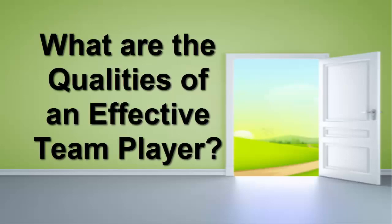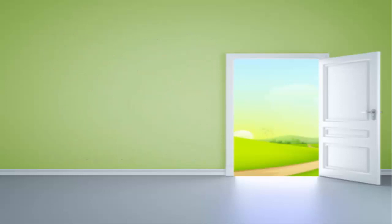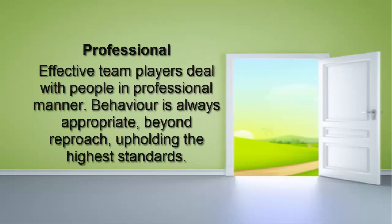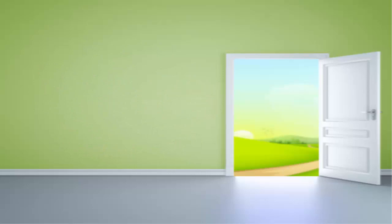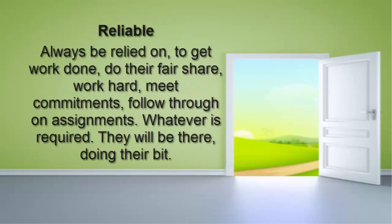So what are the qualities of an effective team player? Professional: effective team players deal with other people in a professional manner at all times — their behavior is always appropriate and beyond reproach, upholding the highest standards. Reliable: a good team member can always be relied on to get work done, do their fair share, work hard, meet commitments, and follow through on assignments.